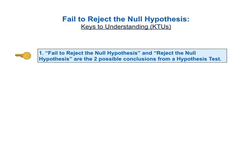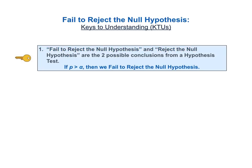Let's go through the list fairly quickly and then follow that with a detailed explanation of each key. The first part of KTU number one is: "fail to reject the null hypothesis" and "reject the null hypothesis" are the two possible conclusions from a hypothesis test. The second part of KTU number one states that if p is greater than alpha, then we fail to reject the null hypothesis.